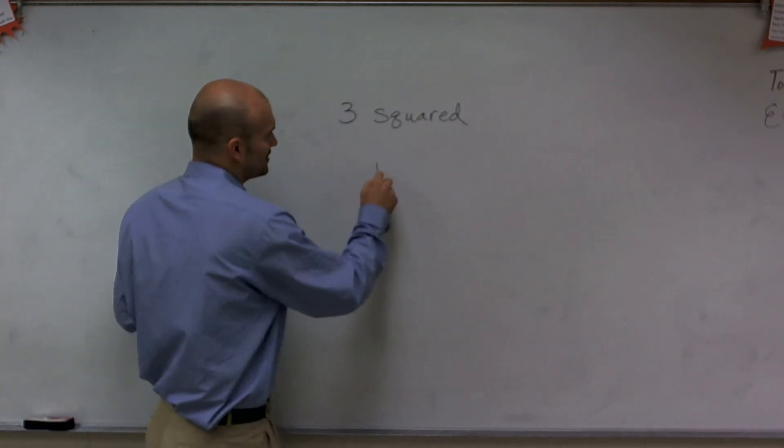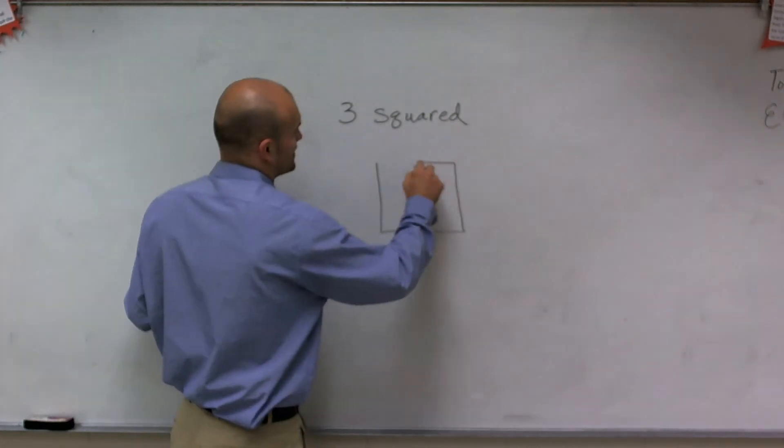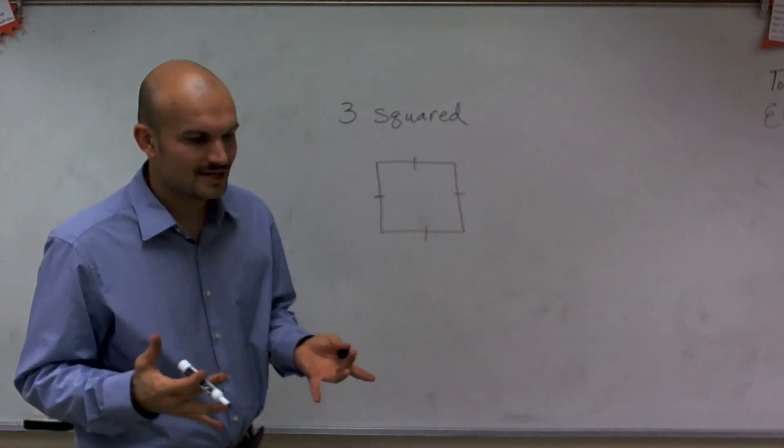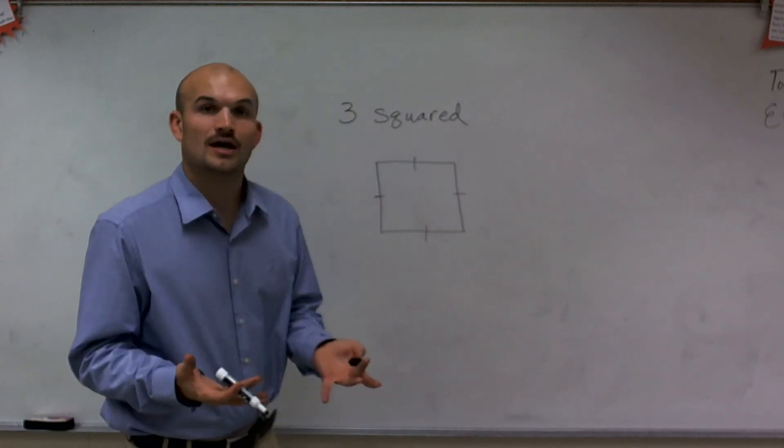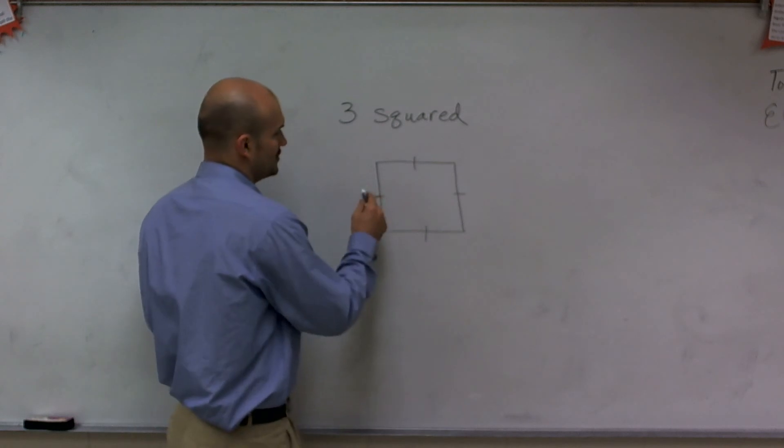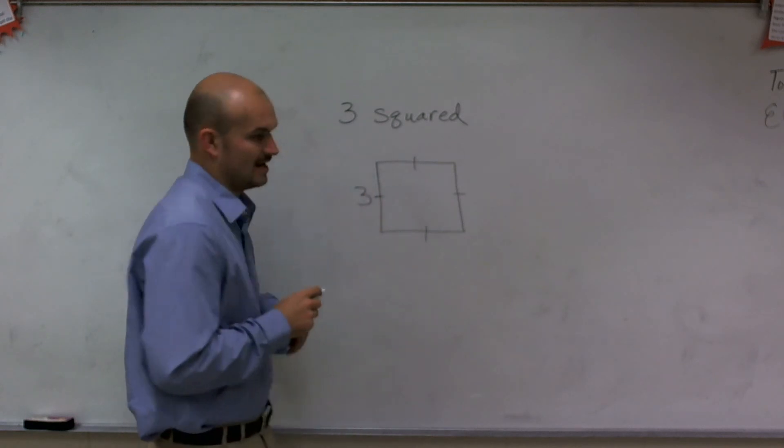So 3 squared comes from the idea of creating a square. And remember, a square has four equal sides. Now, if I wanted to figure out what the area of a square would be, if I knew the length of one side, which we're going to say is 3,